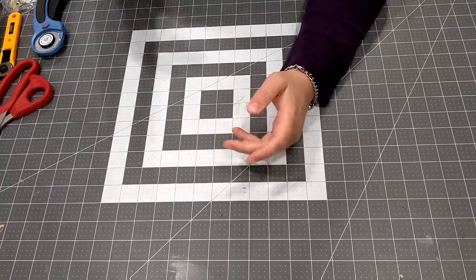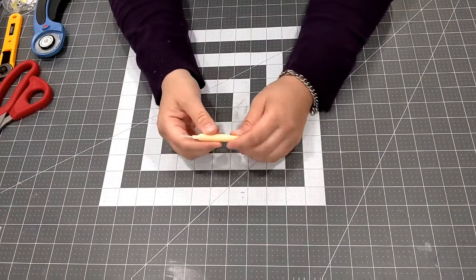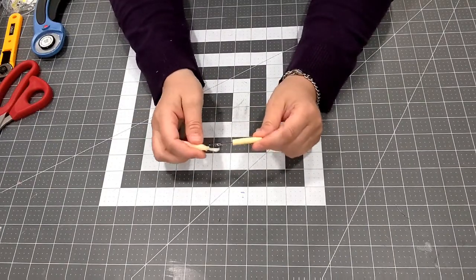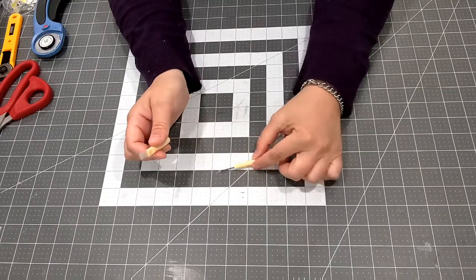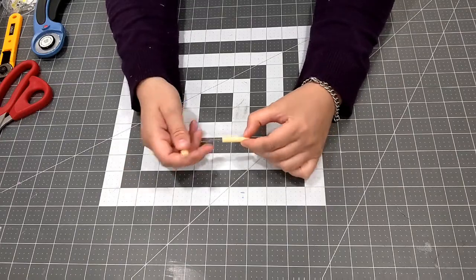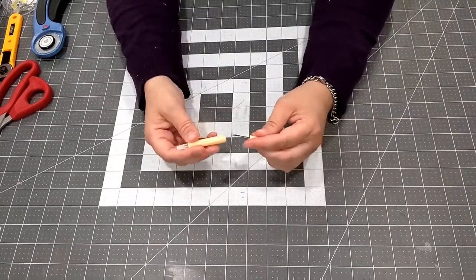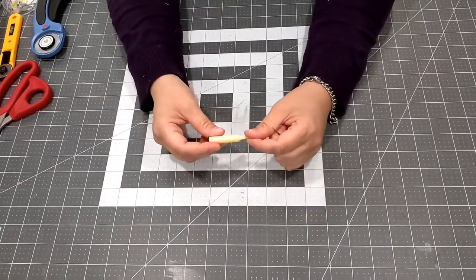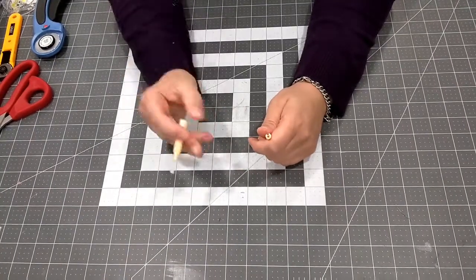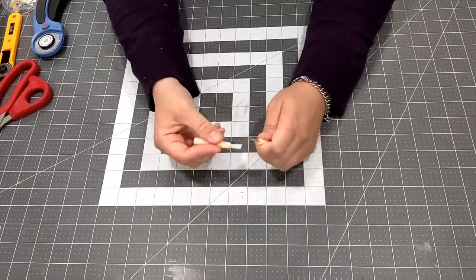Now on to my most frequently used tool: the seam ripper. These usually come with your sewing machines. You can find them anywhere that you shop for sewing stuff. You've got the pointy end that you use to cut the stitches, and then it comes with a brush. I use the brush to clean out my sewing machine from lint, but I guess you could use it to brush thread snips away as well.